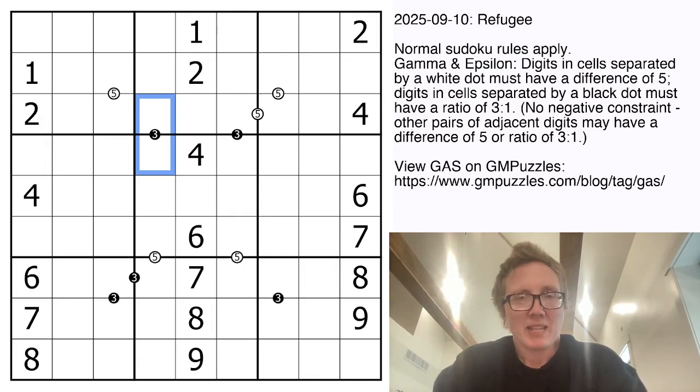Whenever you see a black dot marked with a 3, the two digits on either side have to have a ratio of 1 to 3, or in other words, one of them has to be 3 times larger than the other. The pairs that work there are 1 and 3, 2 and 6, or 3 and 9.